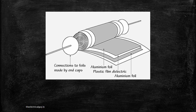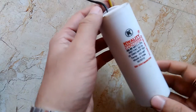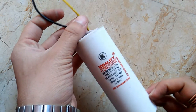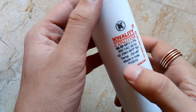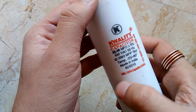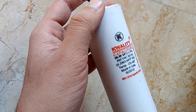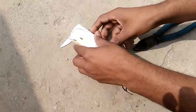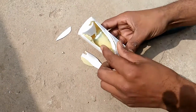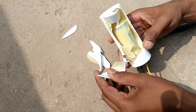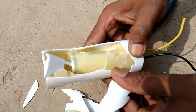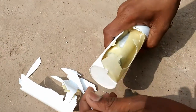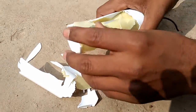Now we will move to our practical section and check whether our theory is true or not. This is the capacitor on which we are going to perform our experiment. It is a 440 volt AC, 50 Hz capacitor, which is generally used in induction motors. Let's see what is inside this capacitor — for that we need to break it open.